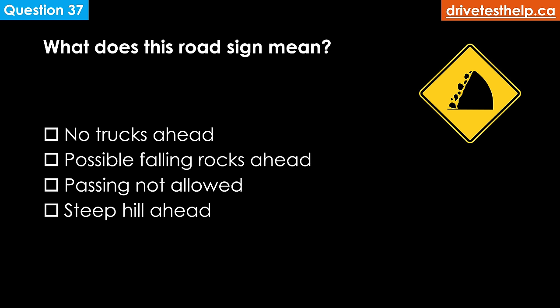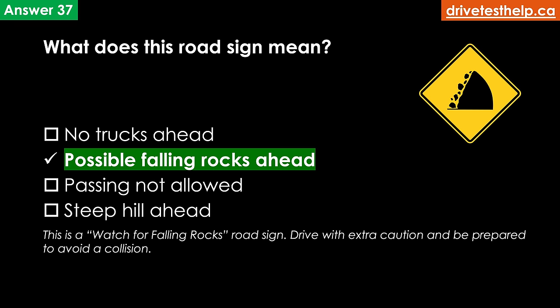What does this road sign mean? Options: no trucks allowed; possible falling rocks ahead; passing not allowed; steep hill ahead. The correct answer is possible falling rocks ahead. This is a watch for falling rocks road sign — drive with extra caution and be prepared to avoid a collision.